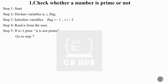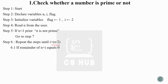If n is less than 1, we directly say the number is not prime and go to the end step. If the number is greater than 1, we check for prime. We repeat the process: check n divided by i from 2 up to n/2. If the remainder of n divided by i equals 0, then we set the flag to 0 and print that it is not prime.